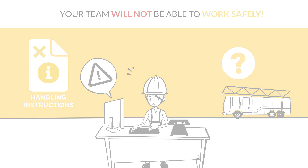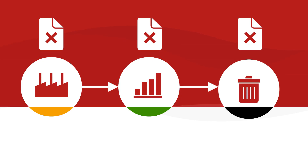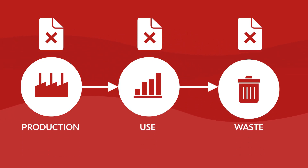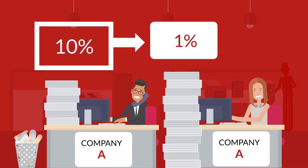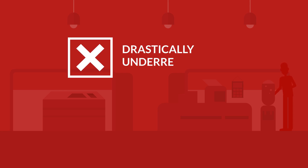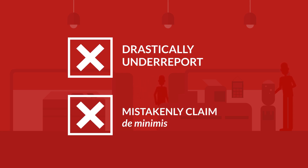These incorrect specifications can propagate throughout your material tracking to affect overall production, use, and waste values as well. The simple mistake of entering 1% instead of 10% could see your facilities drastically under-report their use, or mistakenly claim the de minimis exemptions.